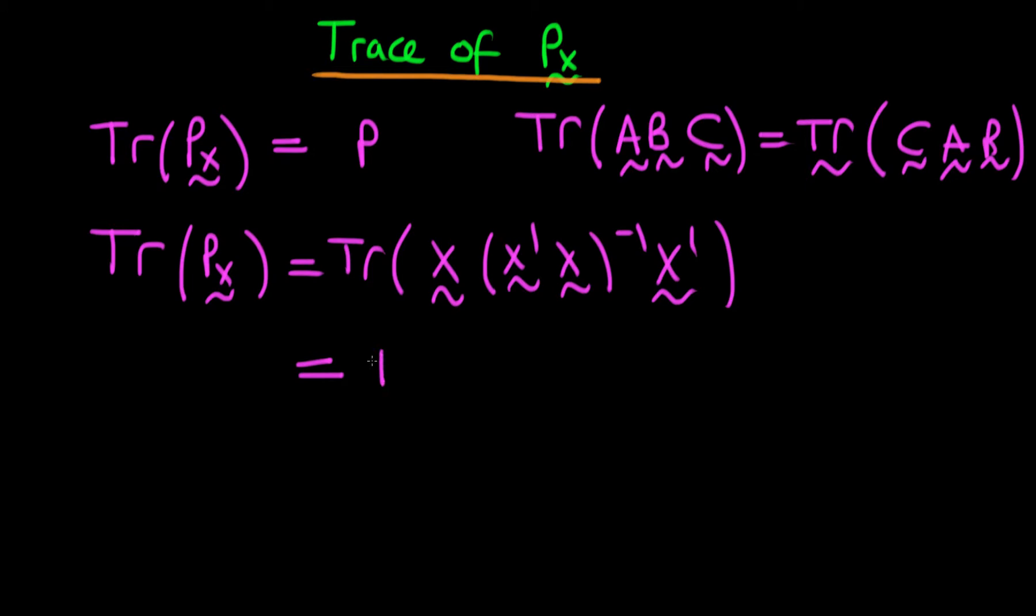So, we can write here that this is equivalent to the trace of, if I take this term here and essentially put it on the end, I've still maintained my order sort of cyclically. So, this is equivalent to the trace of x' x to the power minus 1 times x' times x'. And now we've just got a matrix times its inverse.